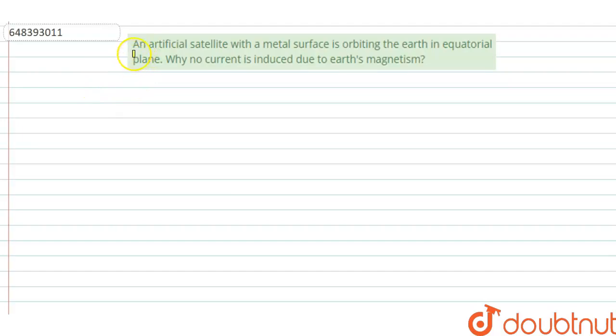The question says: An artificial satellite with a metal surface is orbiting the Earth in equatorial plane. Why no current is induced due to Earth's magnetism? So in this question, an artificial satellite which has a metal surface is orbiting on Earth's equatorial plane. During the orbital motion, no current is induced due to the Earth's magnetism.